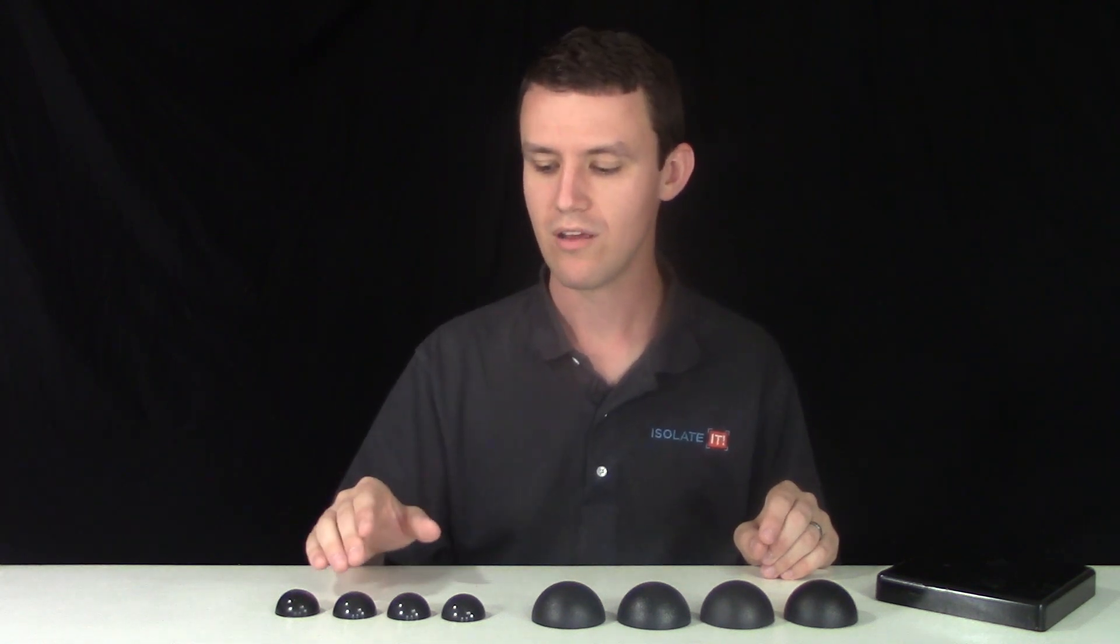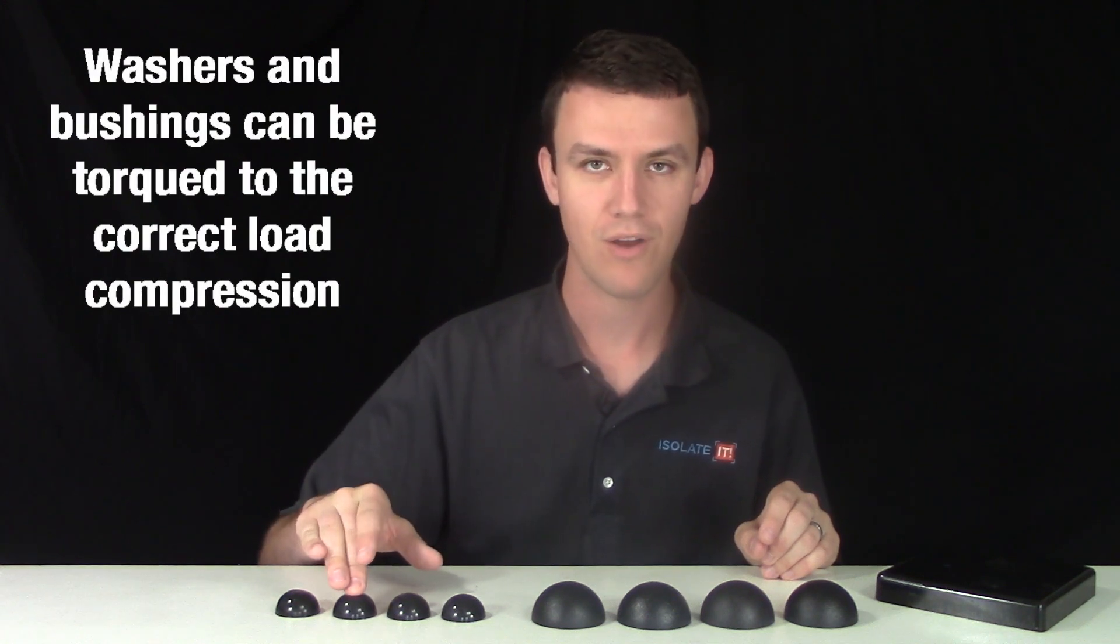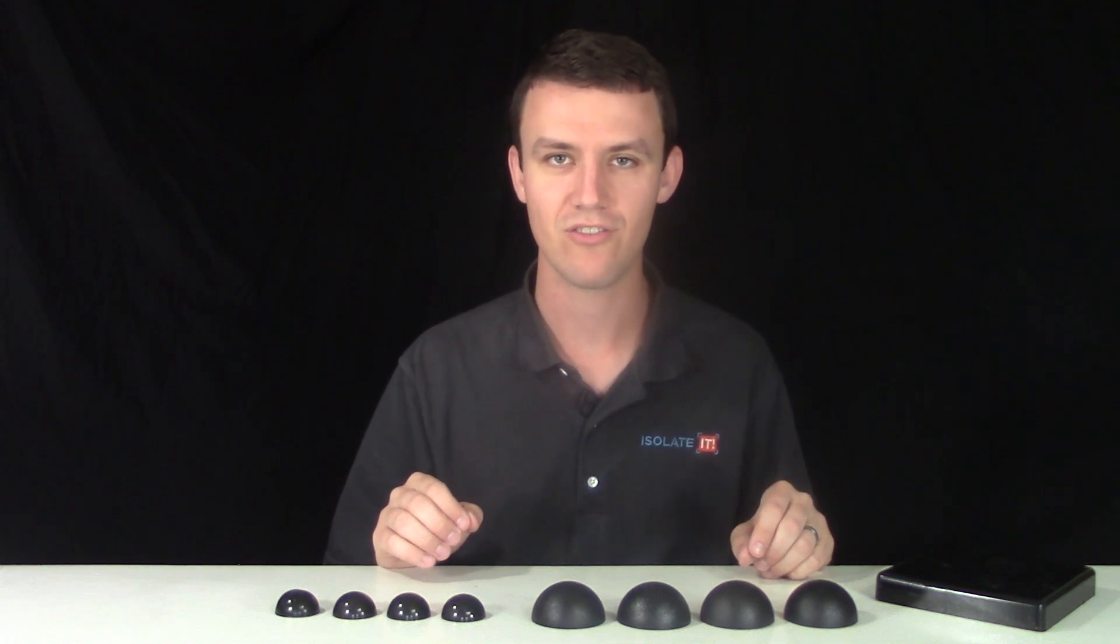To properly load your sorbethane, choose the weight loading and then apply it to your object. This will allow the sorbethane to compress by about 10 to 20%. At this point, the internal structure of the sorbethane will begin to behave like a fluid, providing you with up to 94.7% vibration reduction that you need.